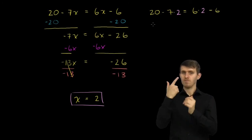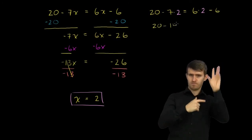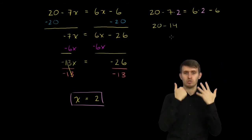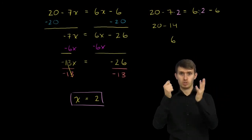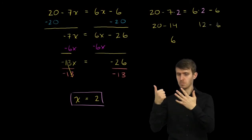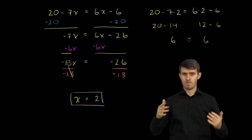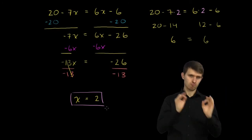So let's verify that this left-hand side really does equal this right-hand side. The left-hand side simplifies to 20 minus 7 times 2, which is 14. 20 minus 14 is 6. That's what the left-hand side simplifies to. The right-hand side, we have 6 times 2, which is 12 minus 6. 12 minus 6 is 6. So they are indeed equal, and we did indeed get the right answer.